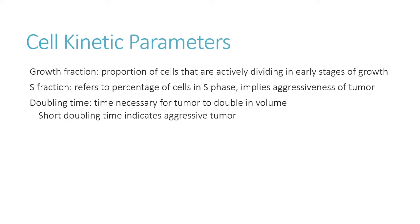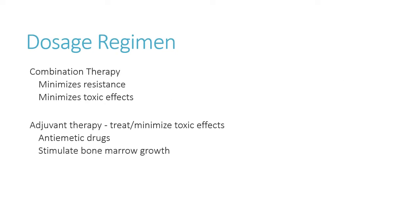The growth fraction is the percentage of cells actively dividing at any given time. The S fraction is the percentage actively replicating their DNA — some drugs are very specific for that phase. The higher that percentage, typically the more aggressive the tumor. The shorter the doubling time, the more aggressive the tumor is as well.